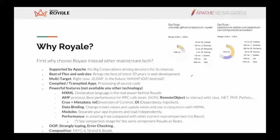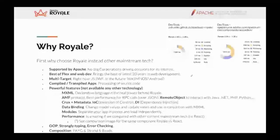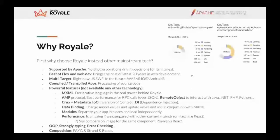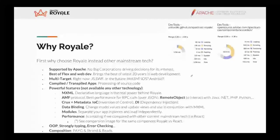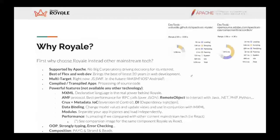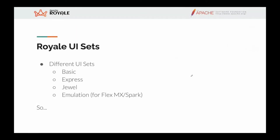The comparison is quite telling. We also have object-oriented programming, static typing, error checking, and composition over inheritance - what we call pay-as-you-go with strands and beads. In Royale we have some UI sets: Basic, Express, Keyword, and Emulation for migration from Flex with MX or Spark, which was covered by Alina. But we are going to focus on Jewel here.